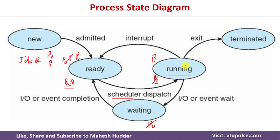P0 is waiting for CPU while P1 is executing. If P1 completes execution, it goes to the terminated state and the CPU becomes free. P0 is then allocated the CPU and starts executing. If P0 completes, it goes to the terminated state; otherwise it goes into the waiting or ready state. Additionally, the operating system may generate interrupts while a process is running, in which case the process is removed from the CPU and placed back into the ready state.